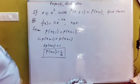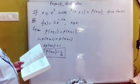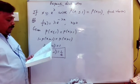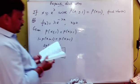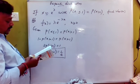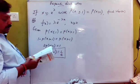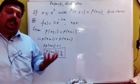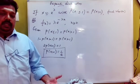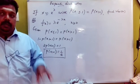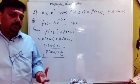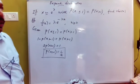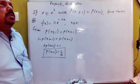Let's find the variance of x. Variance of x equals lambda value. We can find the variance of x using E(X squared) minus [E(X)] squared. We can use this to find the variance.